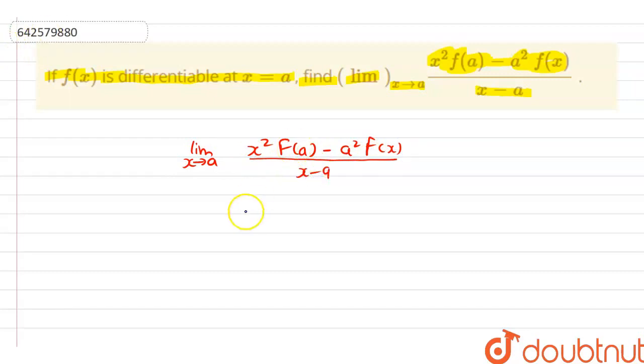So let's put x as a. If we put, then here we have limit x tends to a, here a squared f(a) minus a squared f(a) whole divided by a minus a. So from here, we can see that this will become a 0 by 0 form.